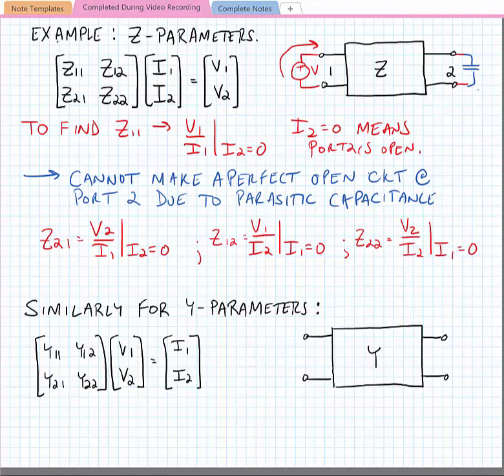We can describe a network in terms of its y-parameters as well. These are the admittance parameters. In this case, if we had an admittance matrix, we could multiply it by a voltage stimulation matrix at port 1 or port 2 and find the output current matrix.